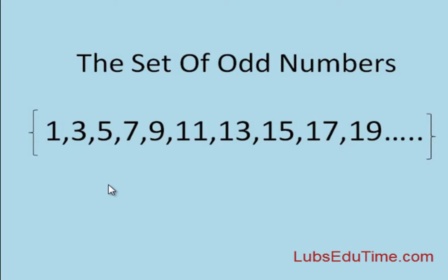Hence odd numbers are numbers ending with the digits 1, 3, 5, 7, and 9.